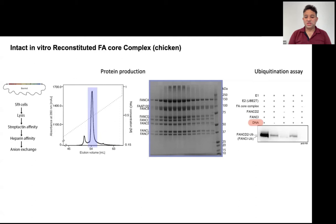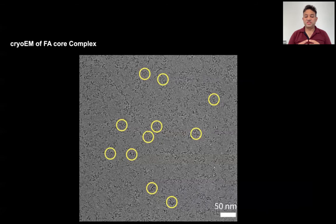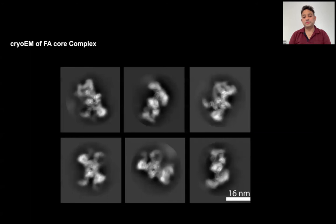Using our ubiquitination assays, we showed that the recombinant complex is active and it ubiquitinates FANCD2 in the presence of DNA. We used CryoEM to determine its structure. This is one such representative micrograph we collected for the FA core complex data. We boxed out several individual particles of FA core from several of these micrographs. We classified these particles into several classes based on their two-dimensional shapes and orientations.